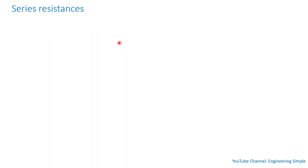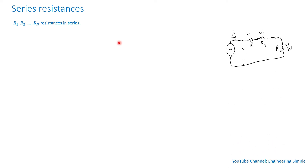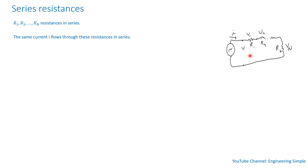The power dissipated by a resistor is I squared R — the square of the current flowing through the resistor times the resistance. Now let's assume we have resistances R1, R2 through Rn in series. Looking at the circuit to the right, we have a source with current flowing through these resistances in series.